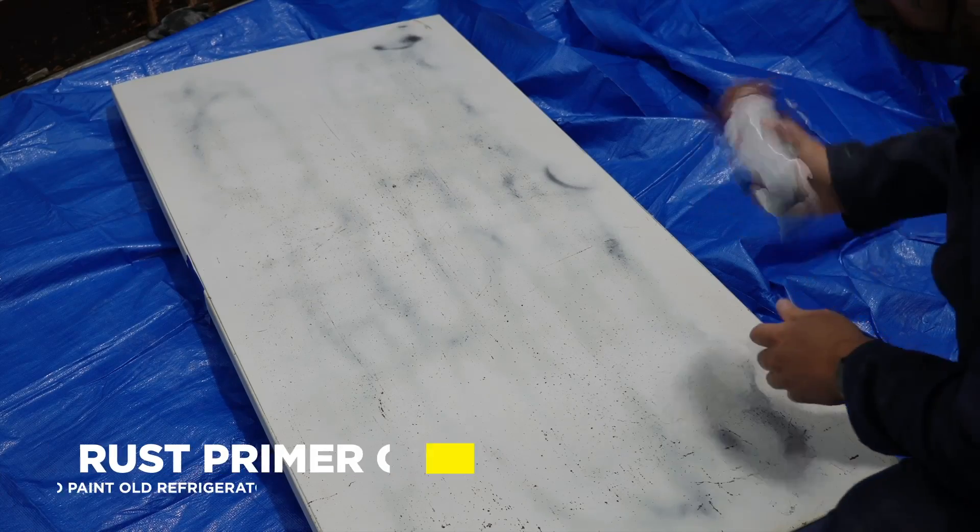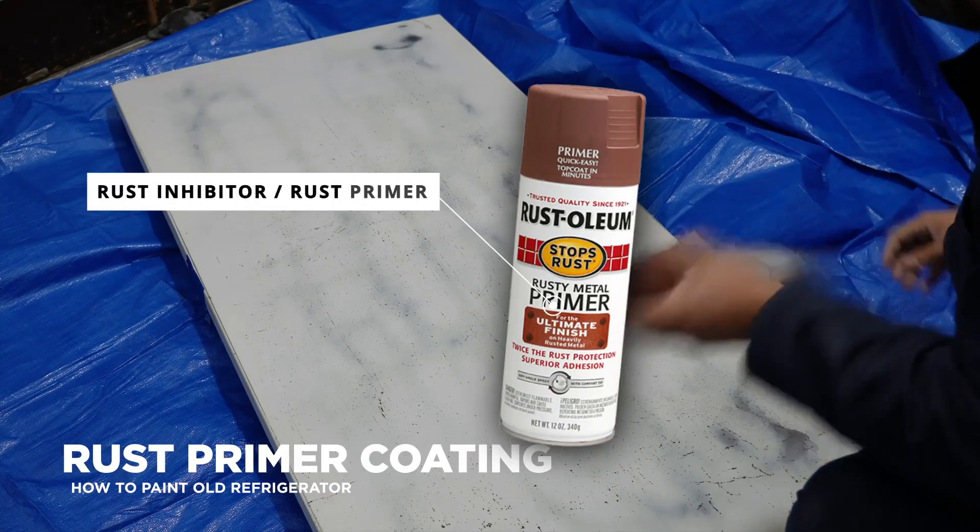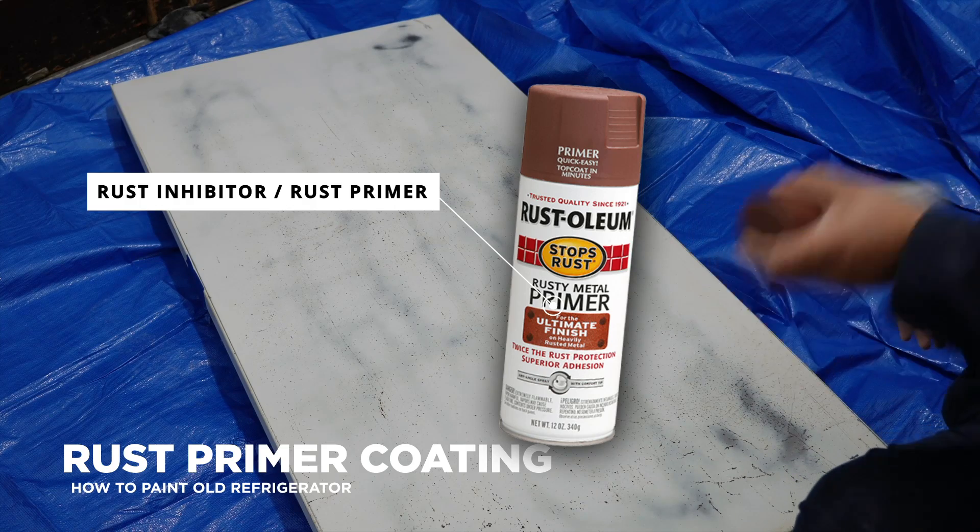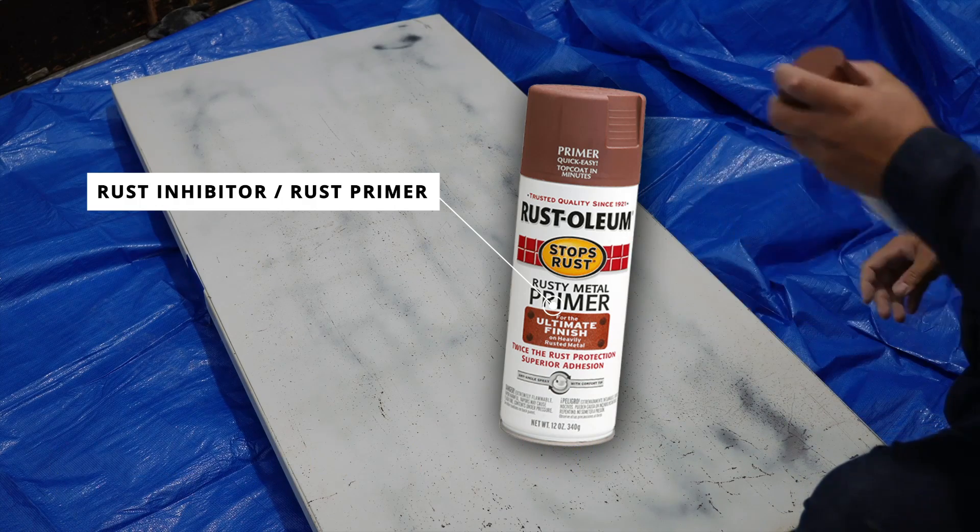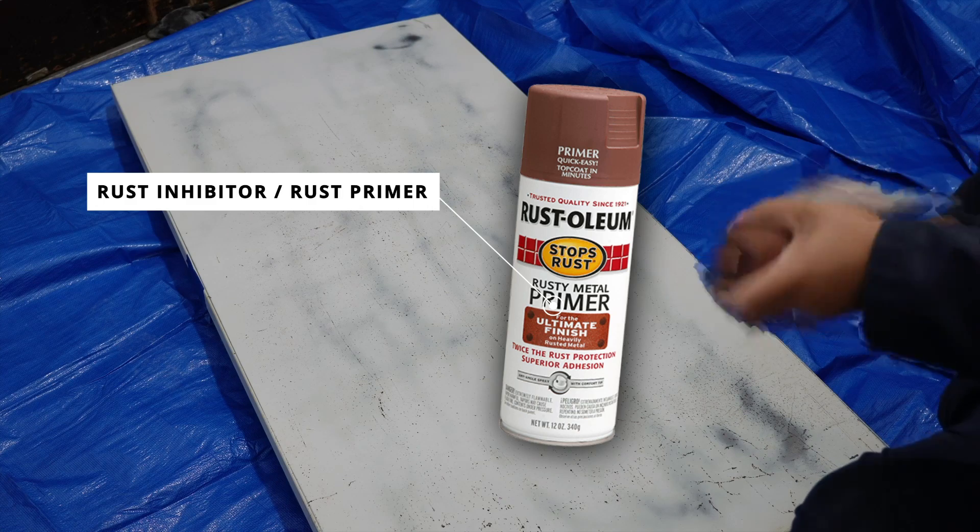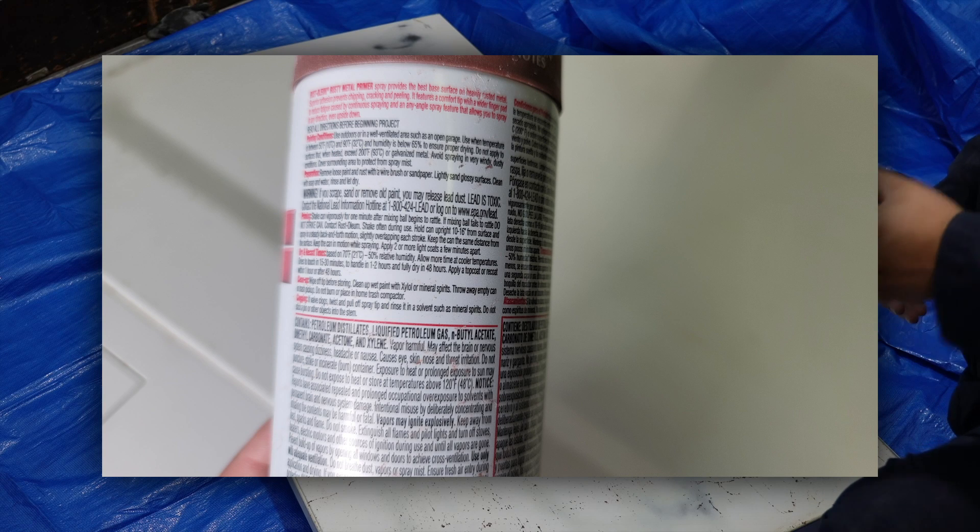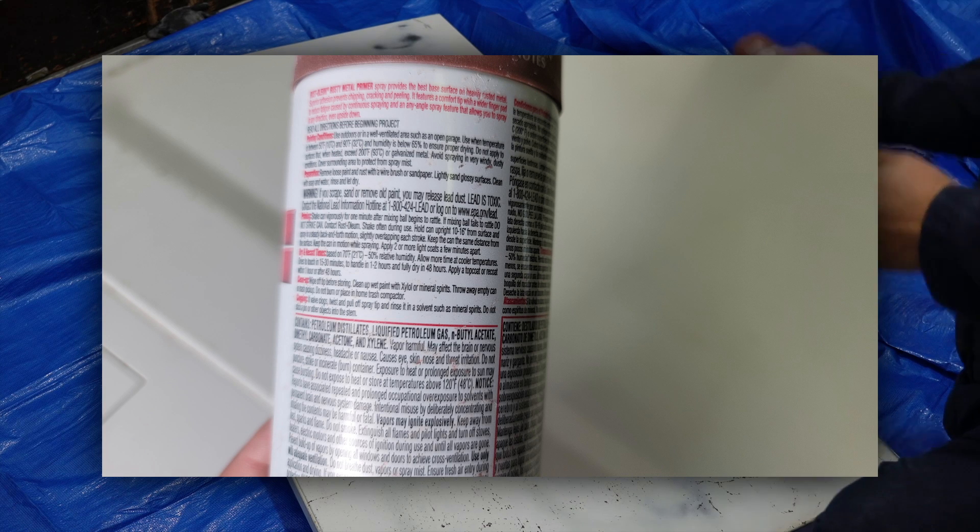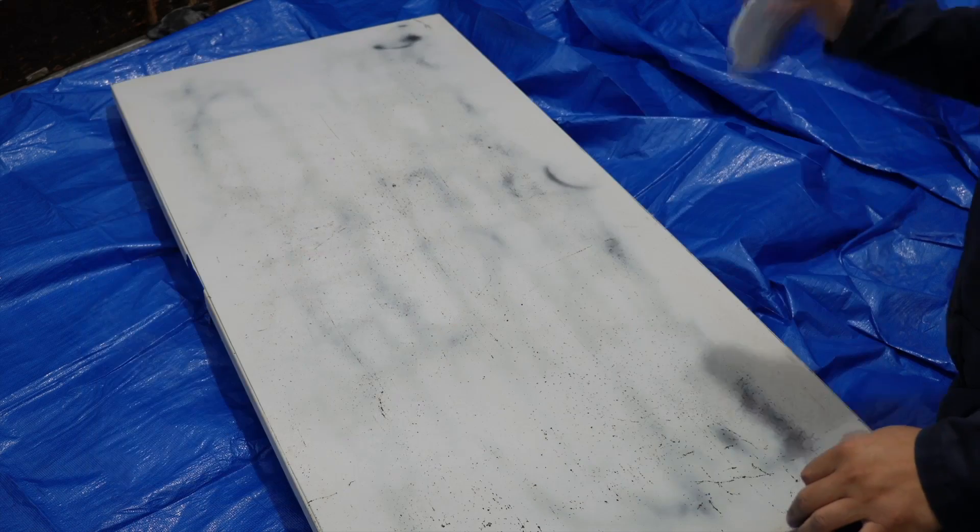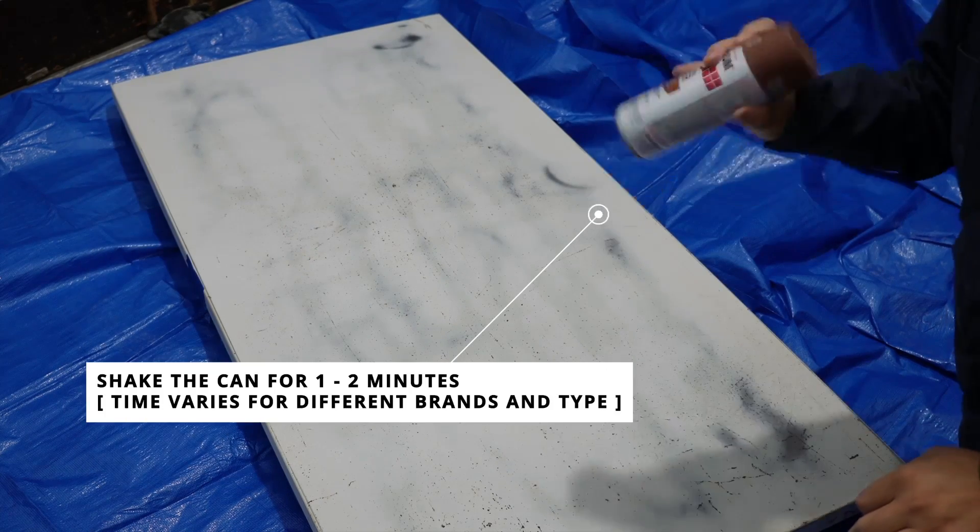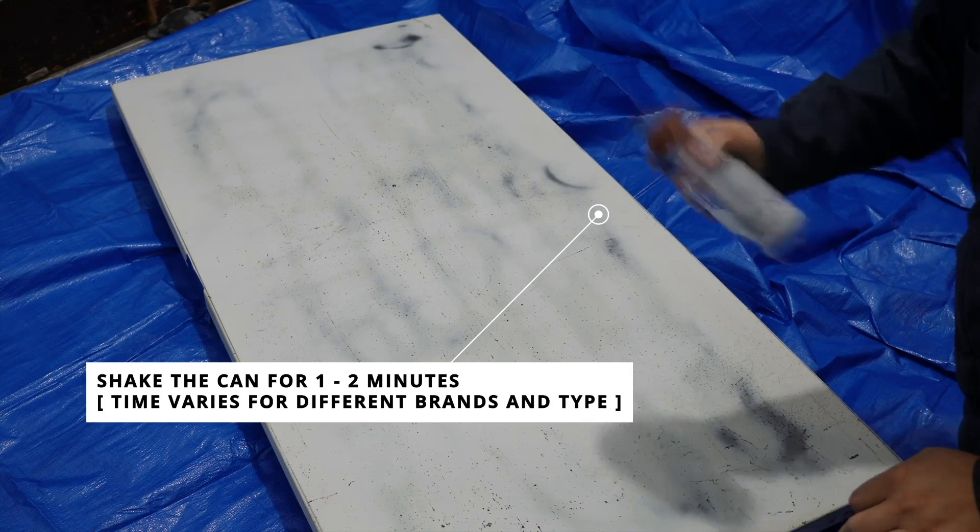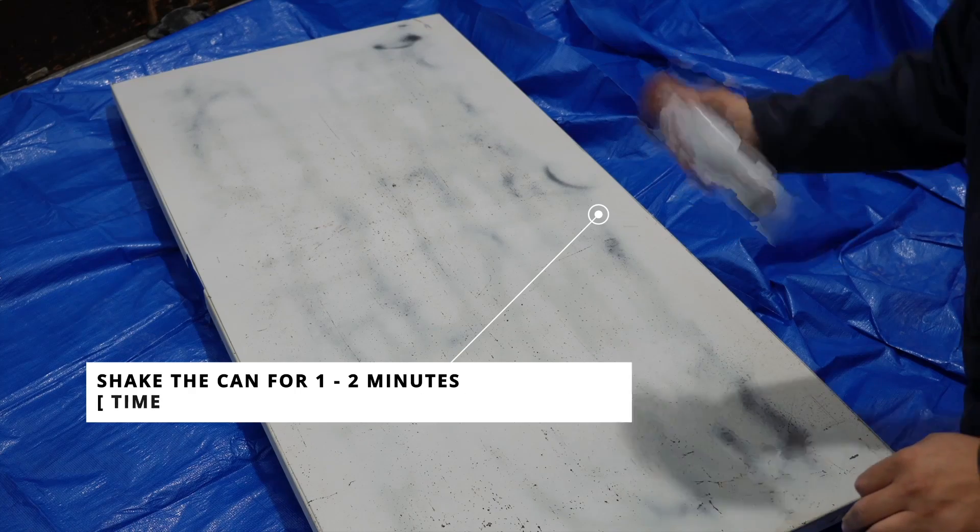So what you want to use first is something called a rust inhibitor. This will change the properties of the rust to allow you to paint over it without any issues and it acts as a primer which helps the painting process. I'm using Rust-Oleum rust primer. Make sure to read the instructions. I and my staff have been using Rust-Oleum to repaint appliances for years and one key thing to start is to shake the can for at least one minute, maybe even two. The time could vary from can to can. Read the instructions.